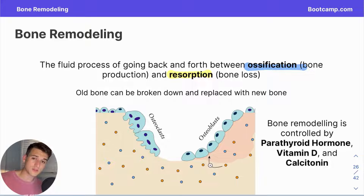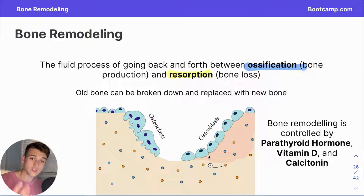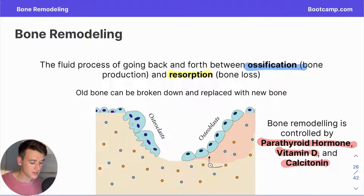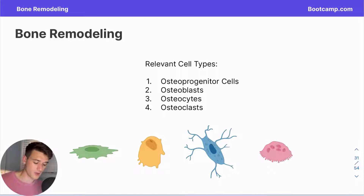Looking at our slide, bone remodeling is controlled by parathyroid hormone, vitamin D, and calcitonin — two hormones and one vitamin. What we're talking about specifically is the maintenance of that blood calcium balance. These are the important cells we're going to discuss in more depth as we move through this video on bone remodeling.